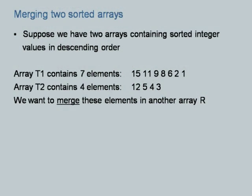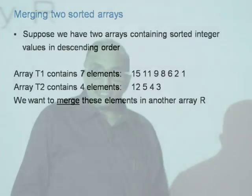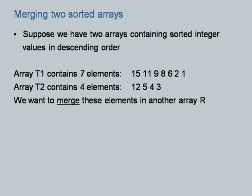Just as with marks for students, several students could score the same marks. If that happens, their relative position in an array does not count — all of them will be considered to hold the same rank. As long as they remain sorted in descending or ascending order, we call that array a sorted array. Our goal is to construct an array R which will contain elements from both arrays but which itself will be in descending order.